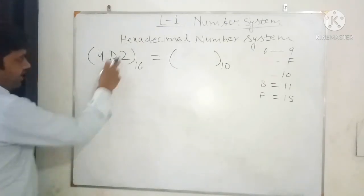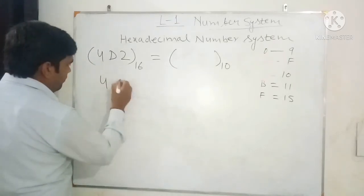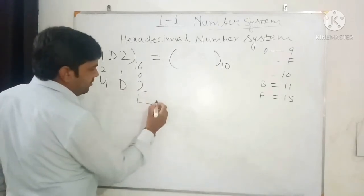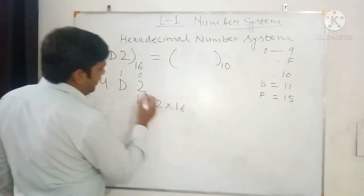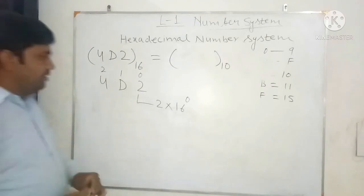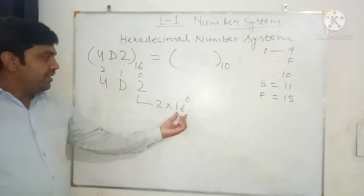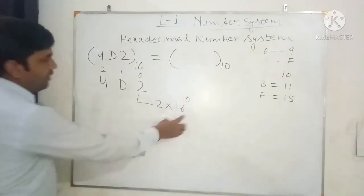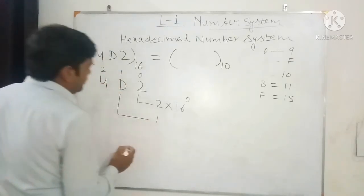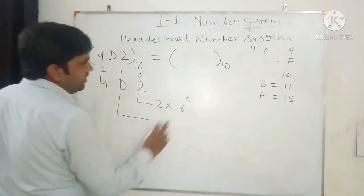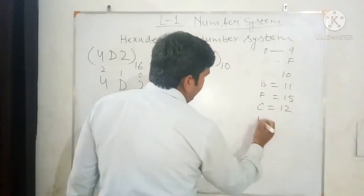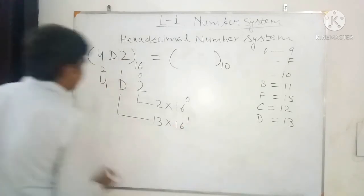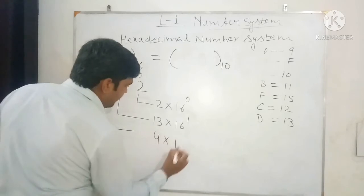We write the positions of each digit: 2 is at position 0, D is at position 1, and 4 is at position 2. The base of hexadecimal is 16, so we multiply each digit by 16 raised to its position. So: 2 multiplied by 16 to the power 0; D (which equals 13 in decimal, since B=11, C=12, D=13) multiplied by 16 to the power 1; and 4 multiplied by 16 to the power 2.